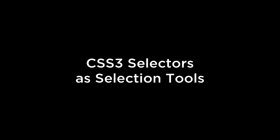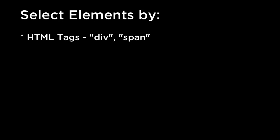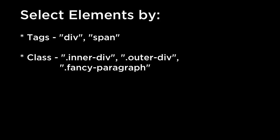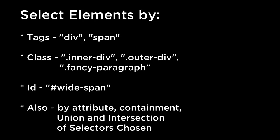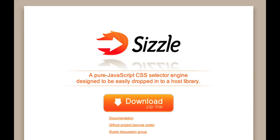CSS3 selectors as the selection tool. D3 uses CSS3 selectors as its selection tool, so you can select elements by HTML tags like div or span, by class like .innerdiv, .outerdiv, or .fancy-paragraph, by ID like #y-span, or by attribute or containment. There can also be a union or intersection of selectors. As a special note, some browsers don't yet support CSS3 selectors natively — for those browsers, you should look at the JavaScript library called Sizzle.